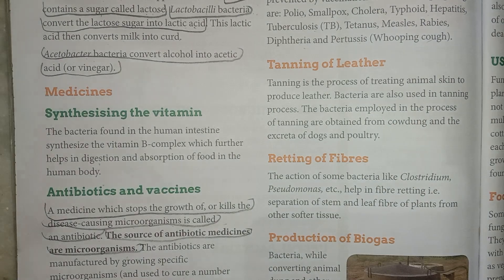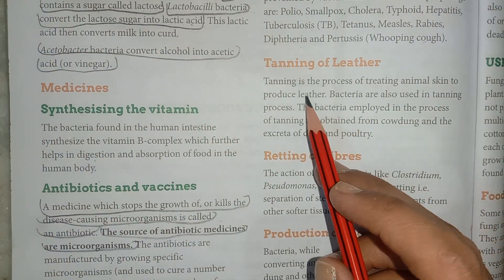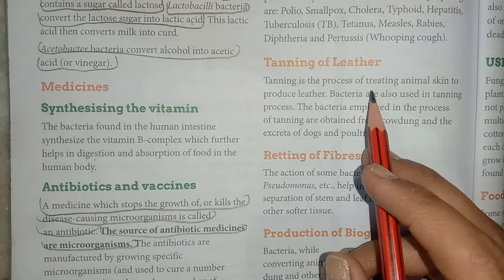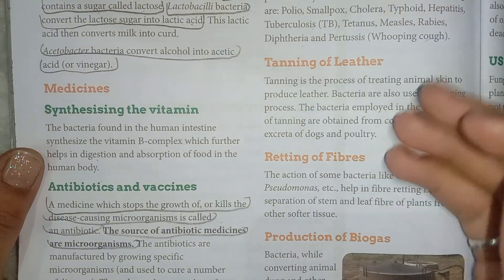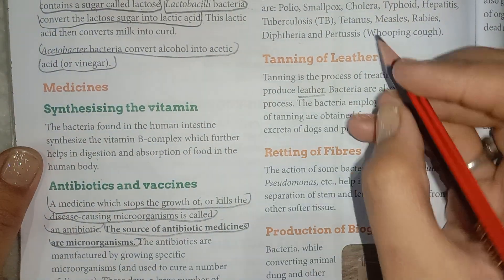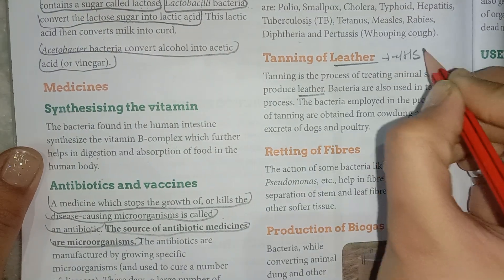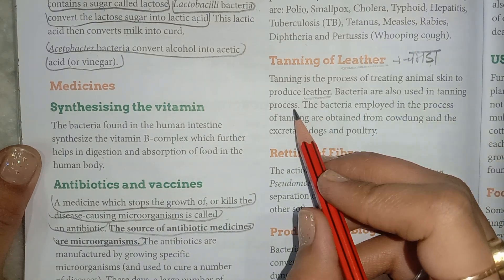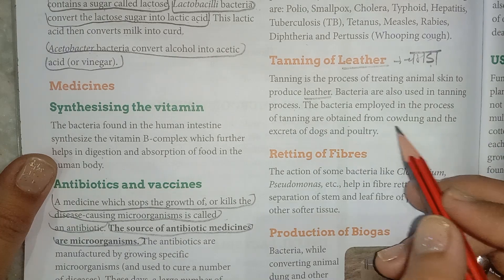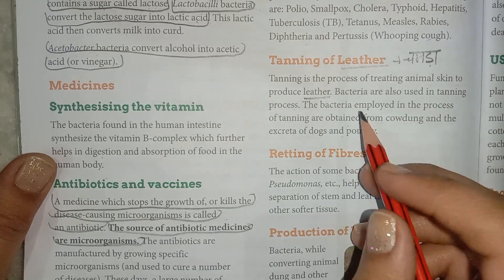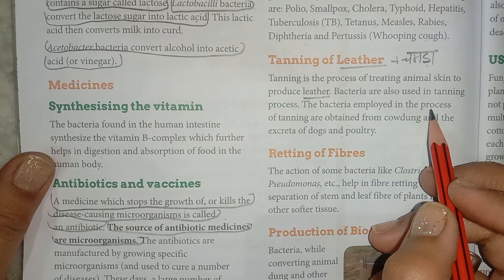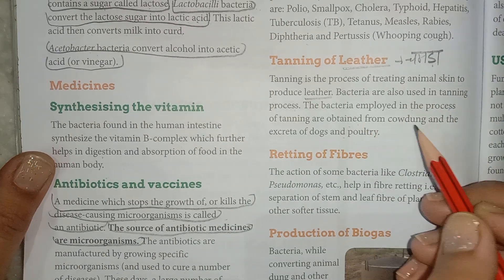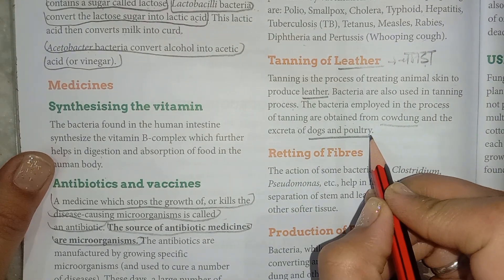Next, we will learn about the tanning of leather. Tanning is the process of treating animal skin to produce leather. Bacteria are also used in the tanning process. The bacteria employed in the tanning process are obtained from cow dung and excreta of dogs and poultry.